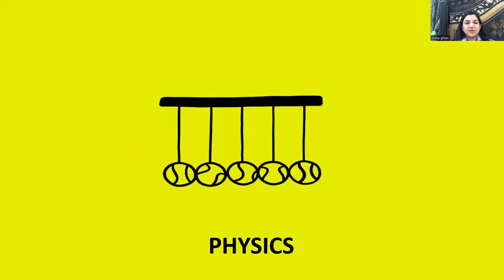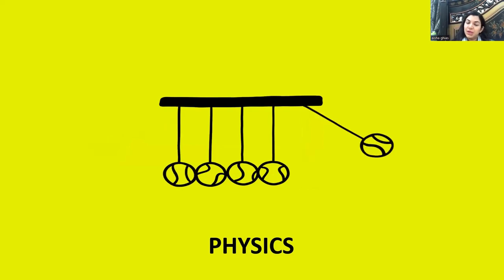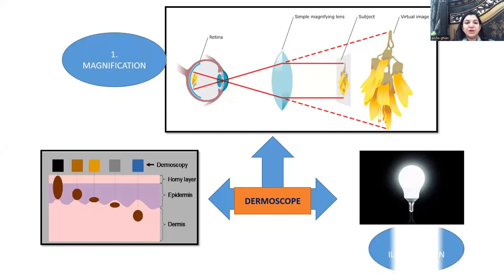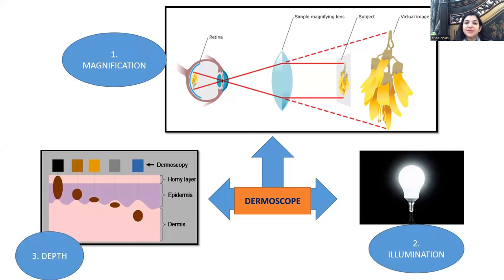What is the physics of dermoscopy? You need to be confident this tool can diagnose pre-malignant and malignant lesions. Magnifying lenses at your clinic magnify and illuminate. A dermoscope does the same but adds depth — and it's the depth that makes a dermoscope different from and superior to a magnifying lens.